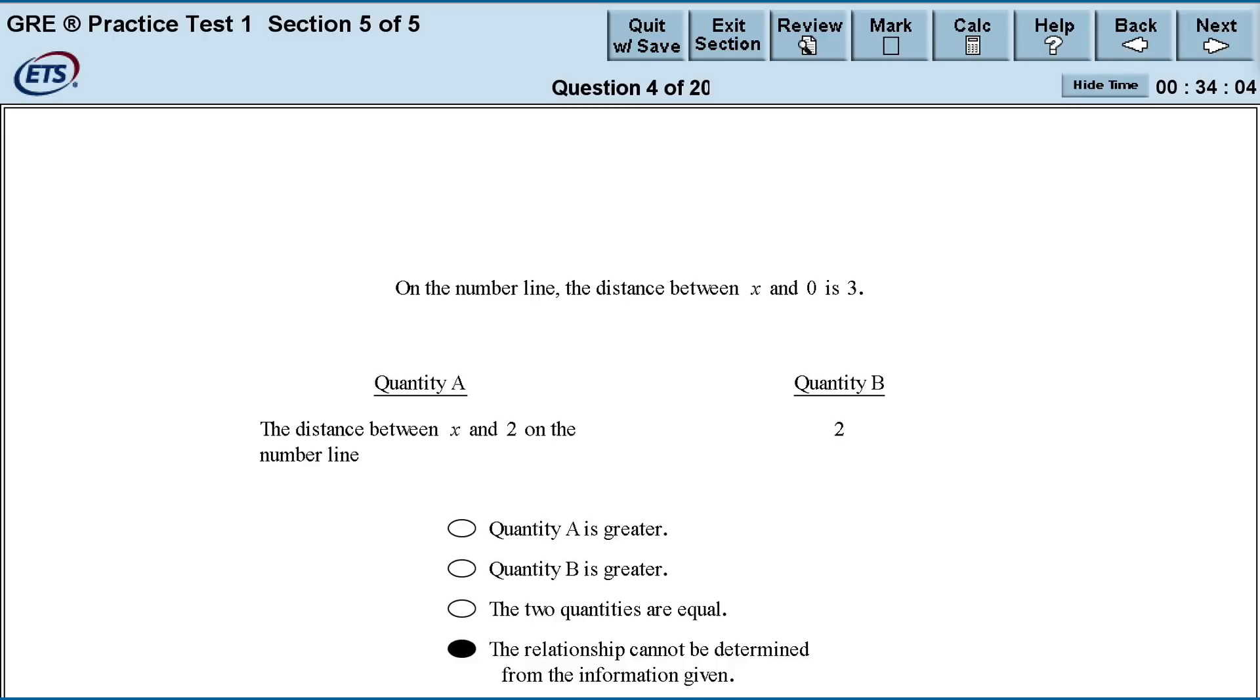In this problem, the distance between x and 0 is 3. Right away, we likely think of x equals 3. This would give us a quantity A of 1, which is less than quantity B. However, when I see a distance problem, I think right away of positive and negative. Distance is an absolute value. This means that x may be 3 to the right of 0, or 3 to the left of 0. This leads me to test negative 3, which will give me a distance of 5, which is greater than quantity B.